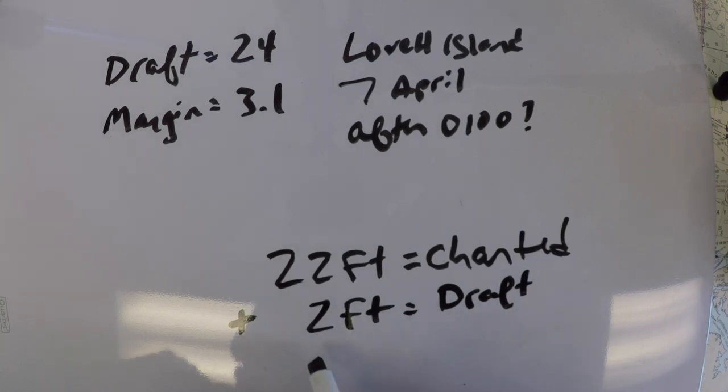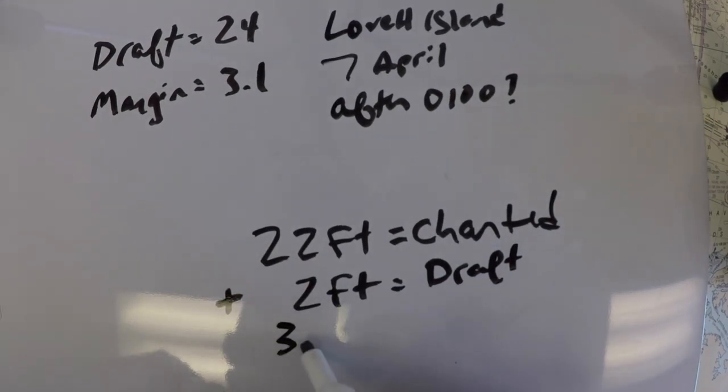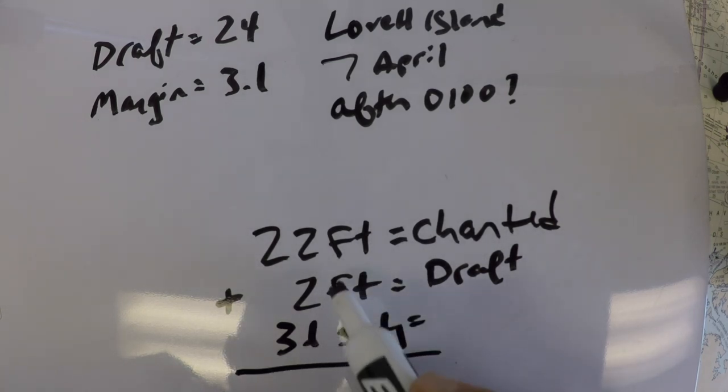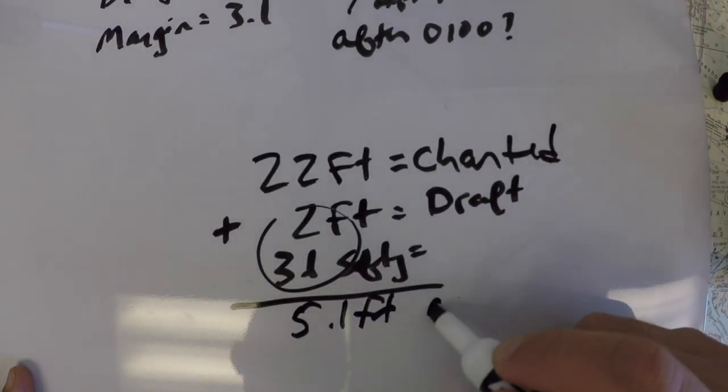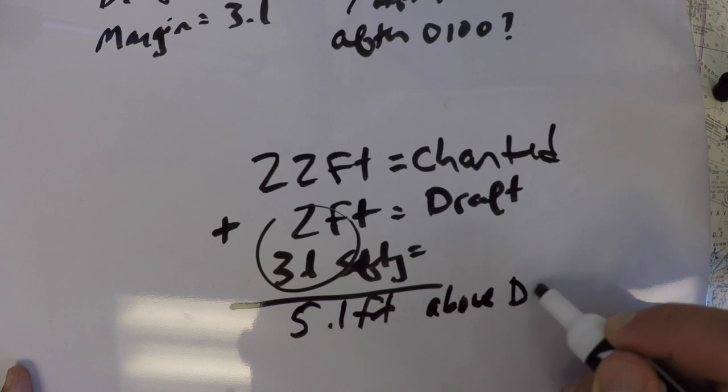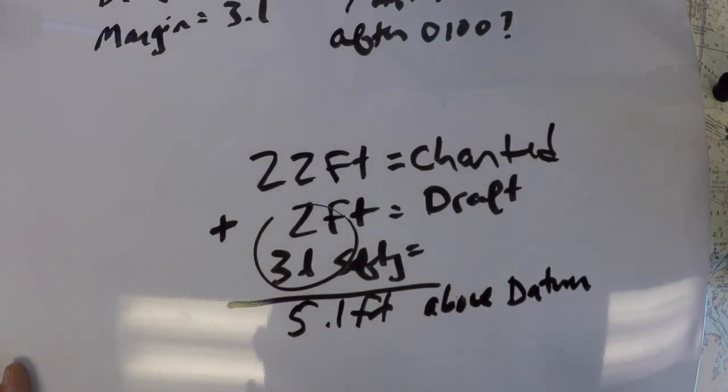And then there's a 3.1 safety margin. So we kind of need, in essence, 5.1 feet above datum. So we're looking for like a zero tide plus 5.1 feet in order to pass over this thing.